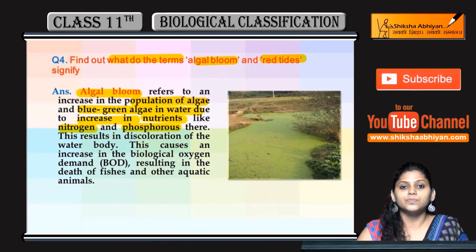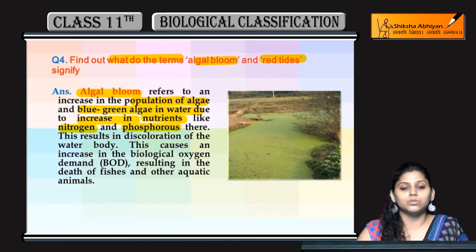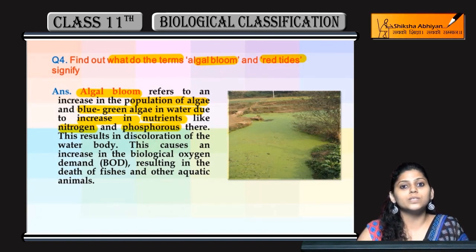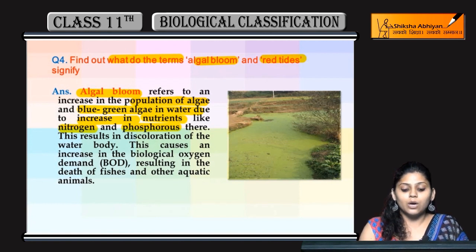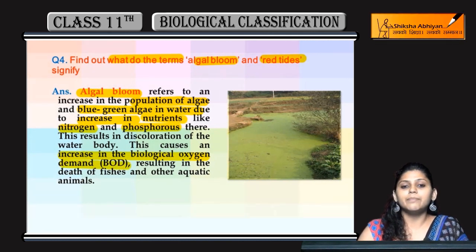Microbes are present to degrade the algae, and aquatic animals are also present — all of them require a lot of oxygen. Because microbes are degrading the algae, they need more oxygen; aquatic animals also need more oxygen. But oxygen is less available, which causes the dissolved oxygen to fall and the biological oxygen demand (BOD) to increase.